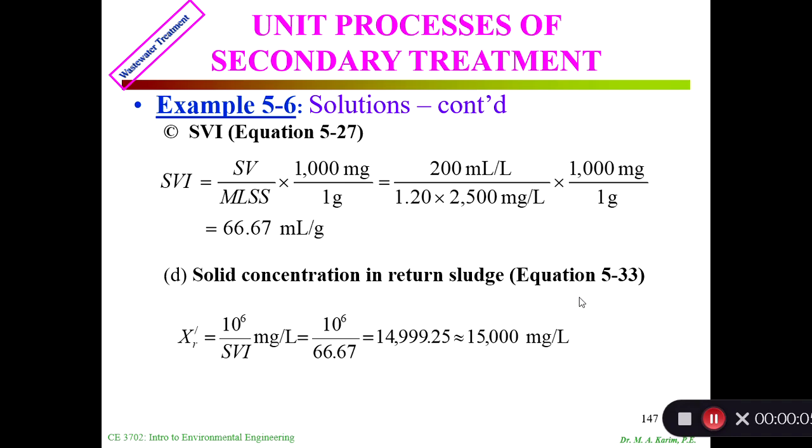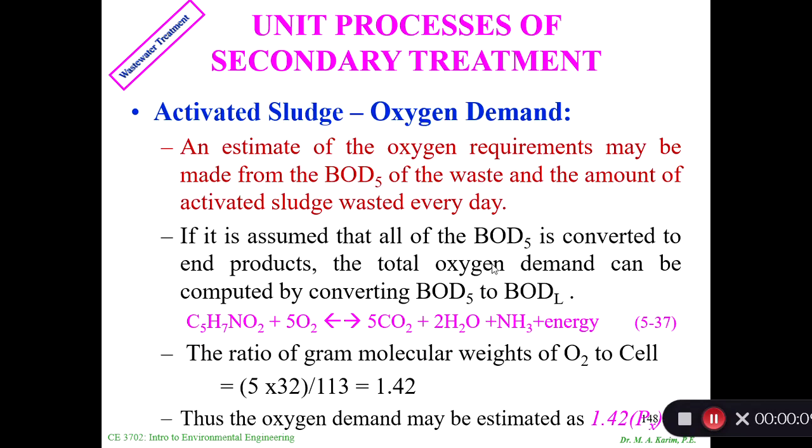Let's start from slide 148. Now we are going to see how the oxygen demand is calculated. Oxygen demand is necessary because we want to do aeration in the activated sludge aeration tank. An estimate of oxygen requirements may be made from the BOD5 of the waste and the amount of activated sludge wasted every day. If it is assumed that all the BOD5 is converted to end products, the total oxygen demand can be computed by converting BOD5 to BOD ultimate.